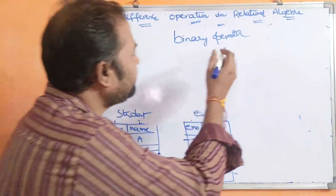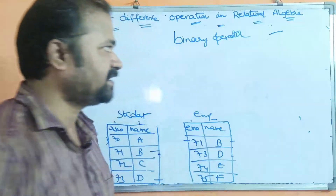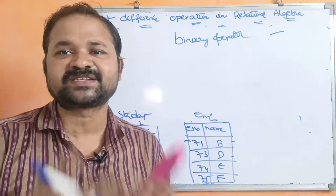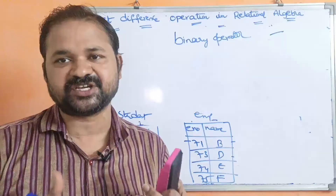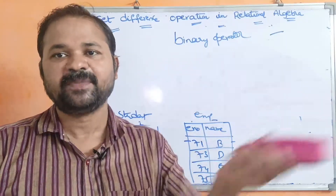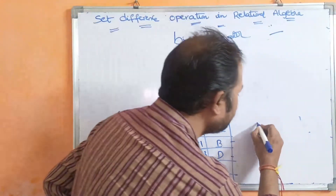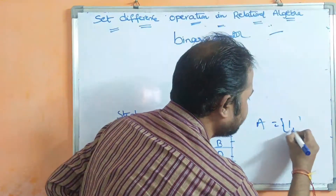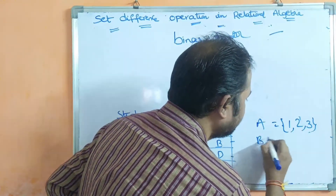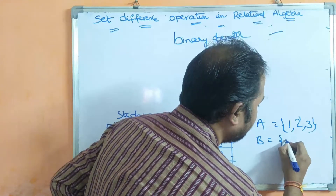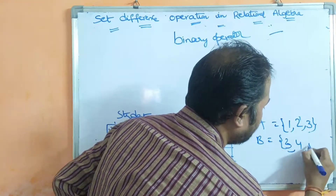The set difference operator is denoted by the minus symbol. Set difference simply performs a subtraction operation between two sets mathematically. Let the first set A = {1, 2, 3} and the second set B = {3, 4, 5}.